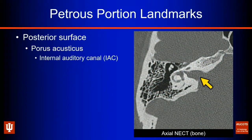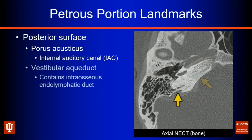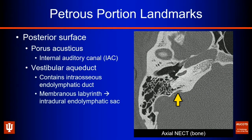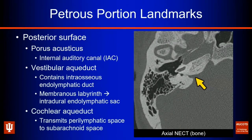Along the posterior surface of the petrous portion, we see the porus acousticus — the opening to the internal auditory canal. Going more posterolateral, we see the vestibular aqueduct, which contains the intraosseous endolymphatic duct, connecting the membranous labyrinth out to the intradural endolymphatic sac. Going more anteromedially, we see the cochlear aqueduct, which transmits the perilymphatic space out to the subarachnoid space — one continuous space.